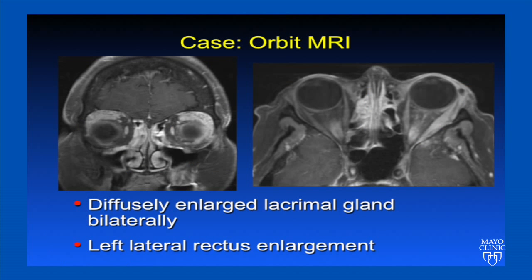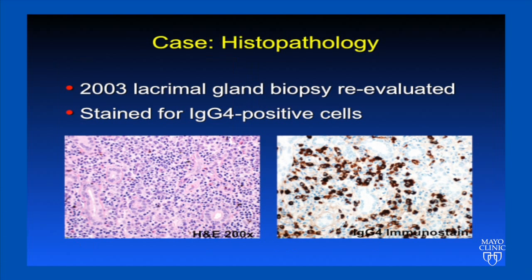Because of her orbital findings, she underwent orbital MRI scanning, which revealed diffusely enlarged lacrimal glands bilaterally and left lateral rectus muscle enlargement. Her 2003 lacrimal gland biopsy was re-evaluated. The H&E stain on the left shows a marked lymphoplasmacytic infiltrate, and on the right is the IgG4 immunostain, showing many IgG4-positive plasma cells.